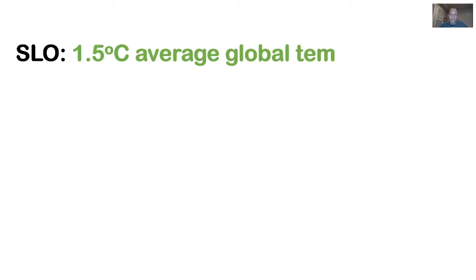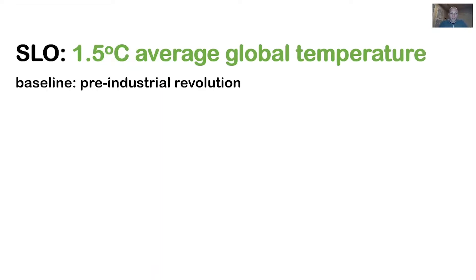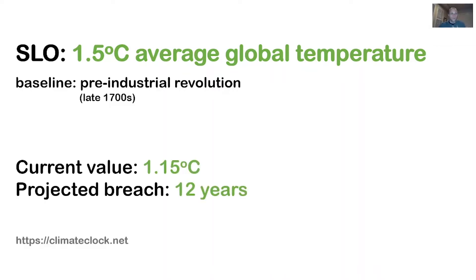Our planet has an SLO. The average global temperature rise needs to stay under 1.5 degrees Celsius as measured from pre-industrial revolution times — roughly the late 1700s. It's important to note that this is an average across the globe, so some places are already past this point. If the planet breaches its SLO, there will be severe impact to its users: the humans, animals, and plants that live on the earth. As of this recording, our SLO value is 1.15 degrees Celsius, and we're about 12 years away from breaching that 1.5 degree line.